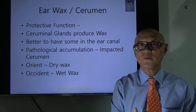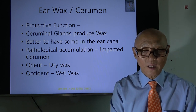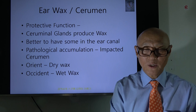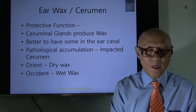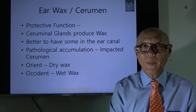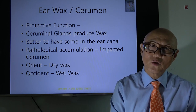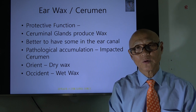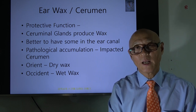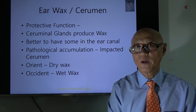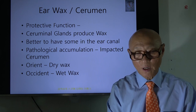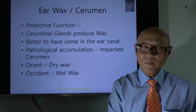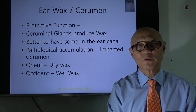Earwax has a protective function. The cerumen gland produces cerumen — wax — and it is better to have some in your ear canal. Sometimes there is a pathological accumulation called impacted cerumen, which needs to be cleaned, but it is best to go to a hospital and have a doctor remove it. If you try to remove it yourself, anything can happen.